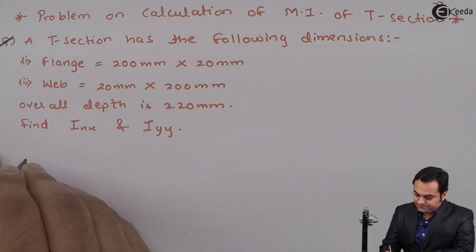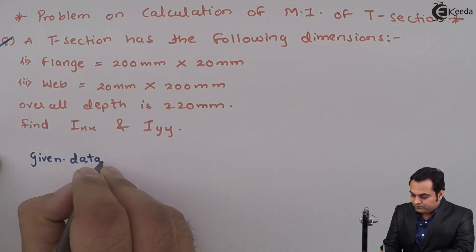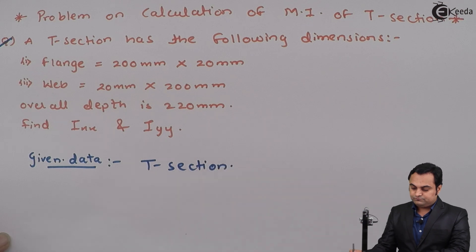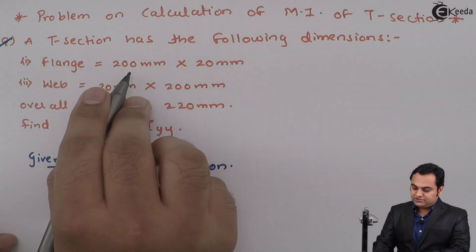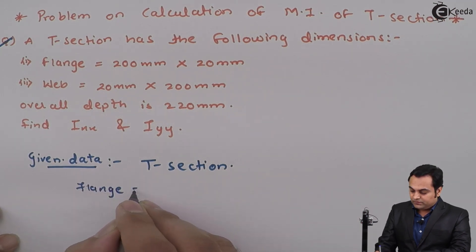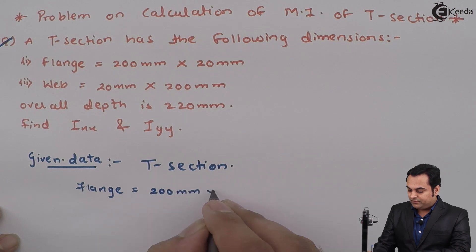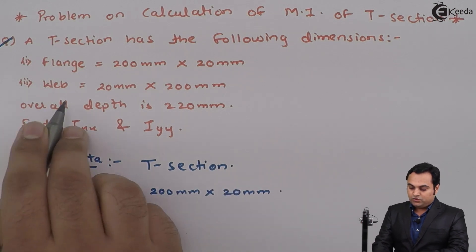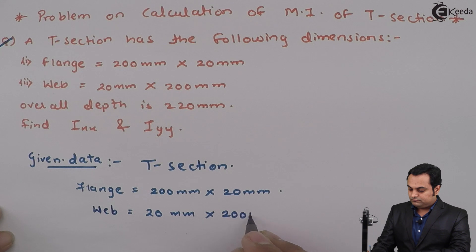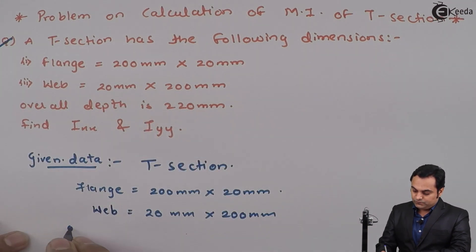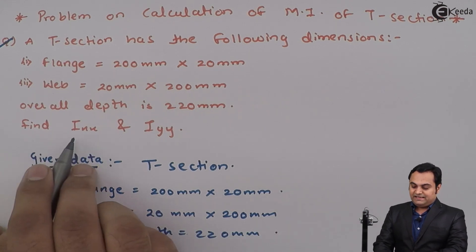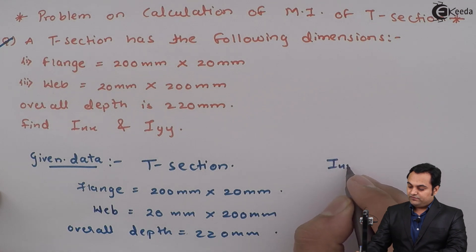From the given data, the flange has dimensions 200 mm × 20 mm, the web is 20 mm × 200 mm, and the overall depth is 220 mm. We need to find Ixx and Iyy.